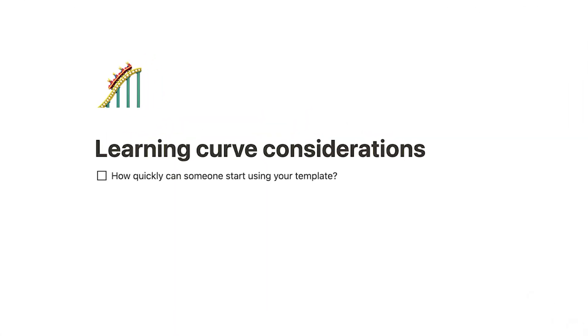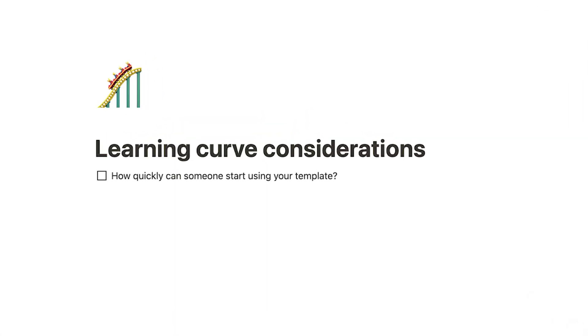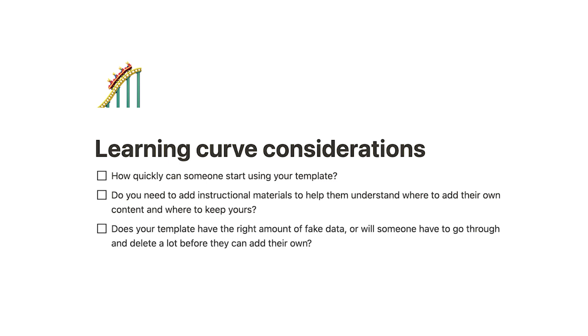Ask yourself: how quickly can someone start using your template? Do you need to add instructional materials to help them understand where to add their own content and where to keep yours? Does your template have the right amount of fake data, or will someone have to delete a lot before they can add their own? A few things you can do to help here include making two versions of the template — one with and one without dummy data — adding instructional elements like videos and callouts, or making a landing or getting-started page if the template is on the more complex side.